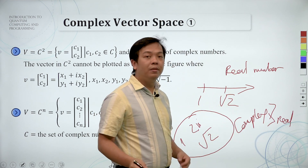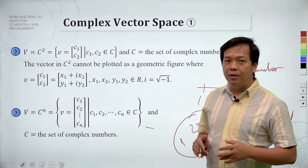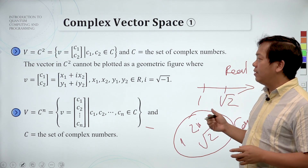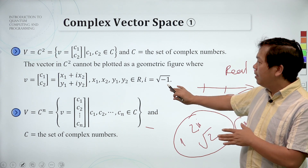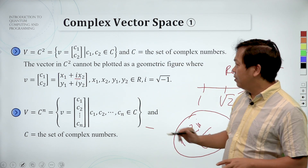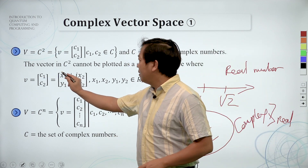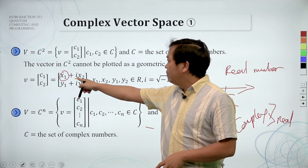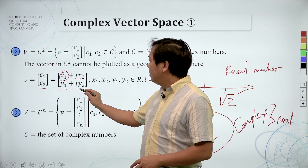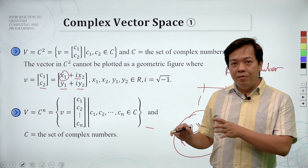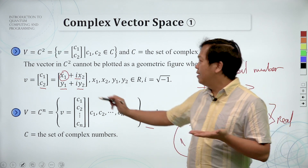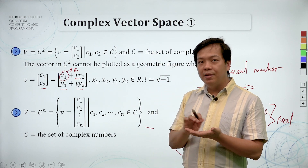In the complex number, we have some differences. You see this i. In the real number, we only have c1 — this real part. But in complex number, we have more: we have i and x2, similar to y, c2. You have y1 and y2, and we have i. The most important thing to remember: in the complex number or complex vector space, you have a first part which is real, and a second part which is complex.